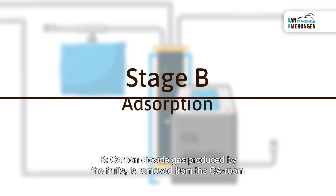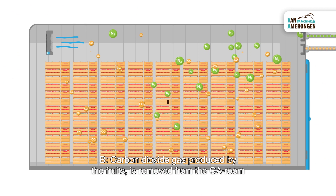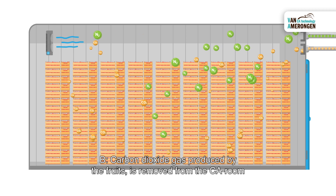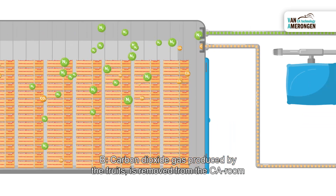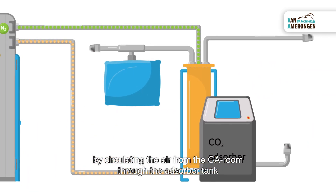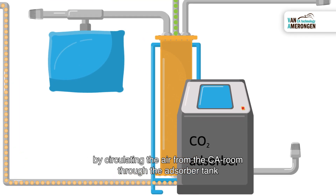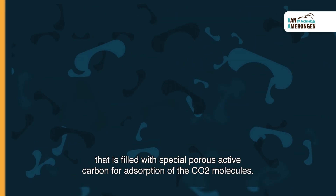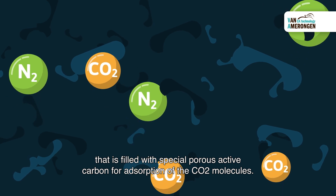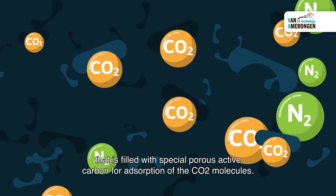B. Carbon dioxide gas produced by the fruits is removed from the CA room by circulating the air from the CA room through the adsorber tank that is filled with special porous active carbon for adsorption of the CO2 molecules.